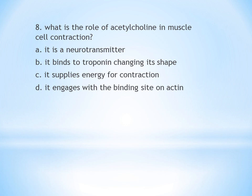Question 8: What is the role of acetylcholine in muscle cell contraction? A. It is a neurotransmitter. B. It binds to troponin changing its shape. C. It supplies energy for contraction. D. It engages with the binding site on actin. The answer is A — acetylcholine is a neurotransmitter. This is an important question.